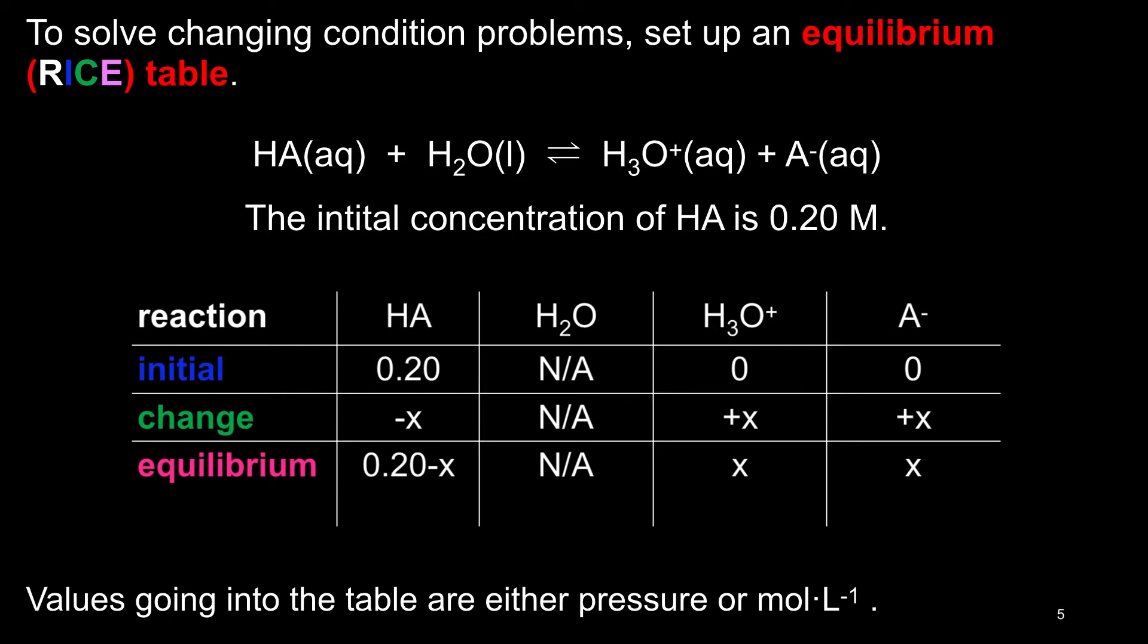As the reaction goes forward, reactant concentrations will decrease as product concentrations increase. The amount of change is not known, so it is called X. The reactant in this reaction will have negative X written in the change box. The two products will have positive X written in their boxes.